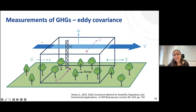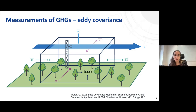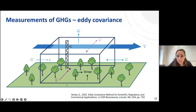The eddy covariance technique is a less intrusive method once installed. It consists of a tower installed above the ecosystem — this example is for a forest, but it works exactly the same in a cropland. The tower has to go above the canopy at a certain distance, and on top of the tower we install certain instruments. Chambers cover a small surface but can be deployed in different treatments, though they don't capture the full spatial variability of the ecosystem.